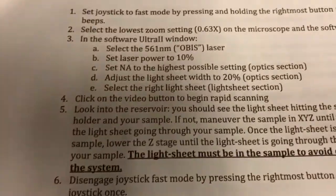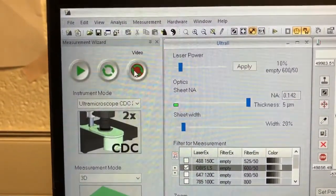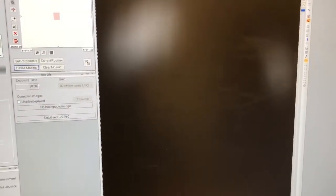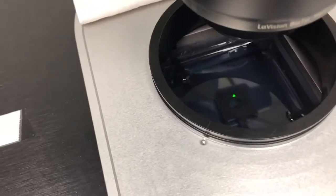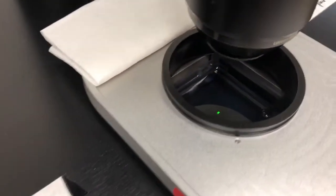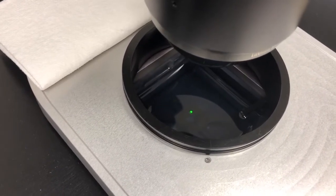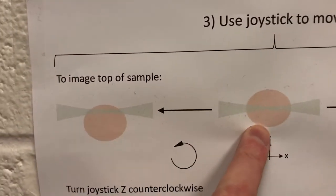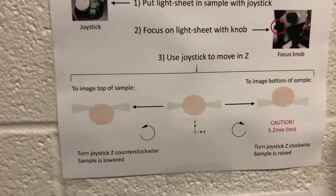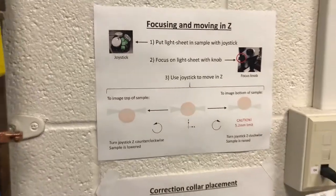Step four is to click on the video button to begin rapid scanning. If you click on this, you'll hear a noise. You typically won't see anything on the screen — don't worry about that. What we now need to do is look into the reservoir and see what's going on in there. This is absolutely critical: before we do anything else, we need to confirm that the light sheet is physically in the sample. We can only confirm that by eye.